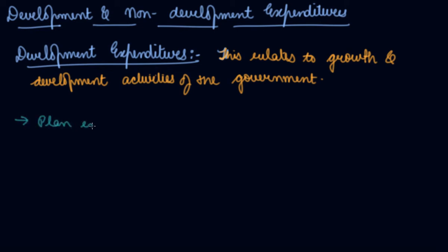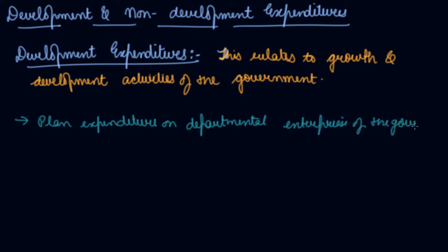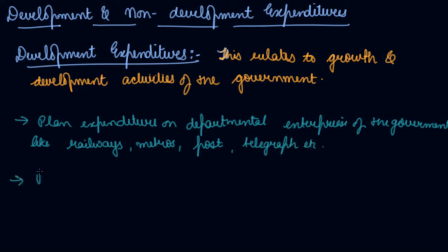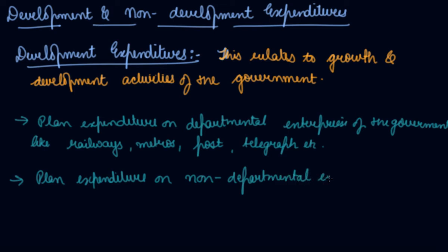Development expenditure is categorized into three types. The first is plan expenditure on departmental enterprises of the government — that is, enterprises already established by the government, such as railways, metros, and post and telegram services. The second is plan expenditure on non-departmental enterprises of the government, such as Air Asia.